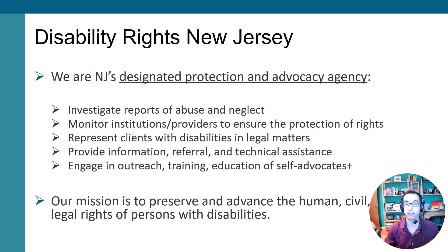Disability Rights New Jersey is a private nonprofit agency designated as the protection and advocacy system for people with disabilities here in the state. Our mission is to preserve and advance the human, civil and legal rights of people with disabilities. We do that by monitoring for and investigating abuse and neglect against people with disabilities, providing individual legal representation, and conducting systemic advocacy. One of the most important things we do is providing educational training and outreach so that everybody knows their rights. This webinar today is an example of that kind of education activity.